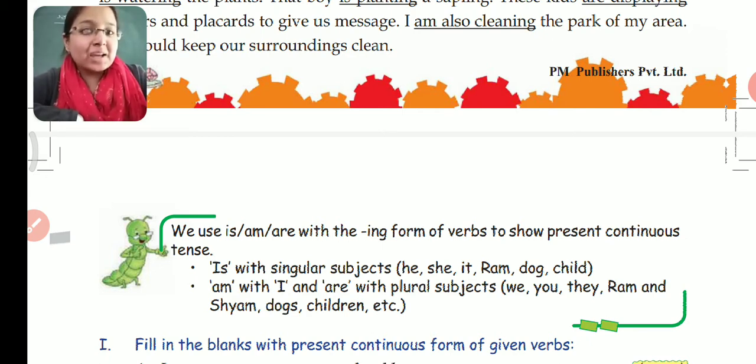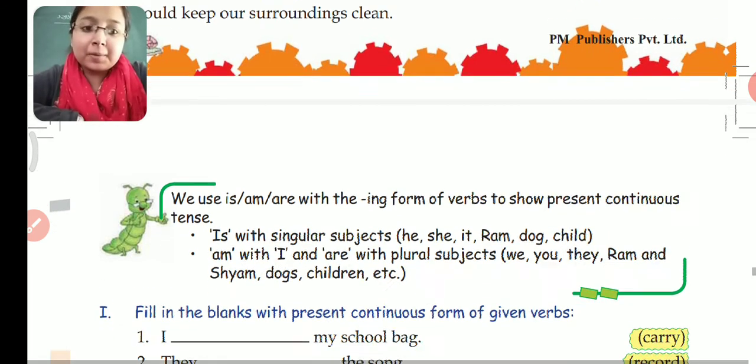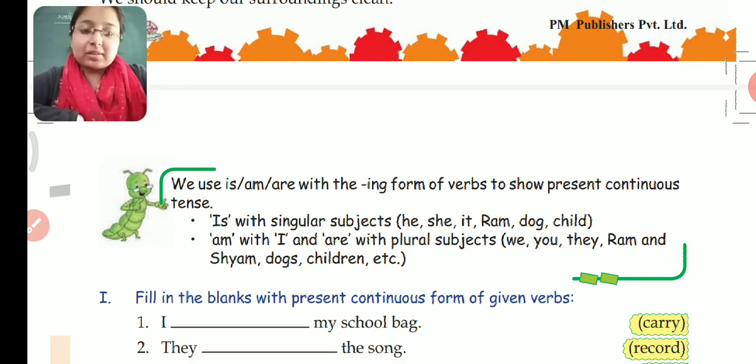Continuous means -ing. Where there is continuous word, you have to use -ing. But we don't use -ing alone, we use the helping verb also. What is the helping verb? Is, am, are. Along with the helping verb, we use -ing. Is is used with singular subjects or singular nouns and pronouns.